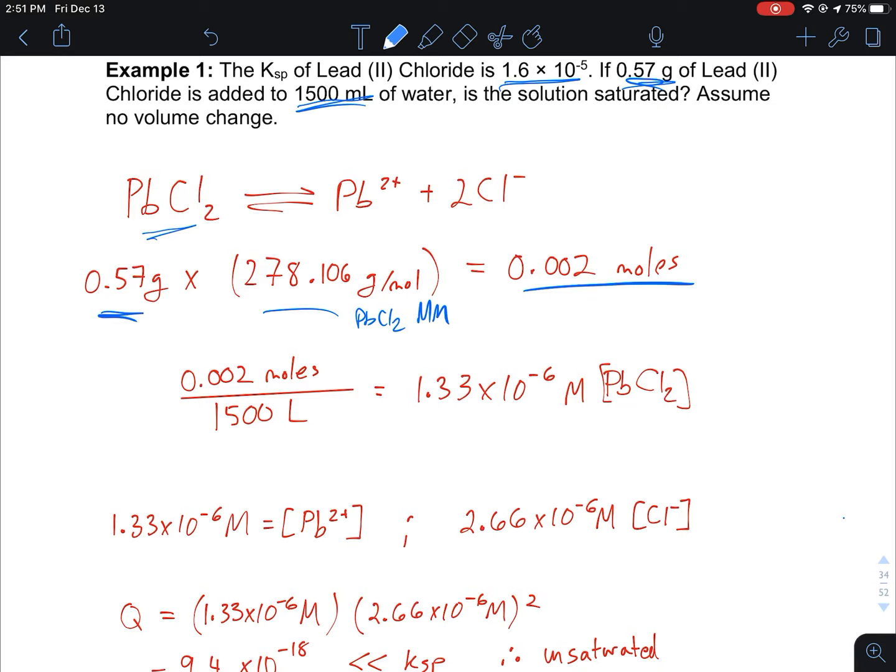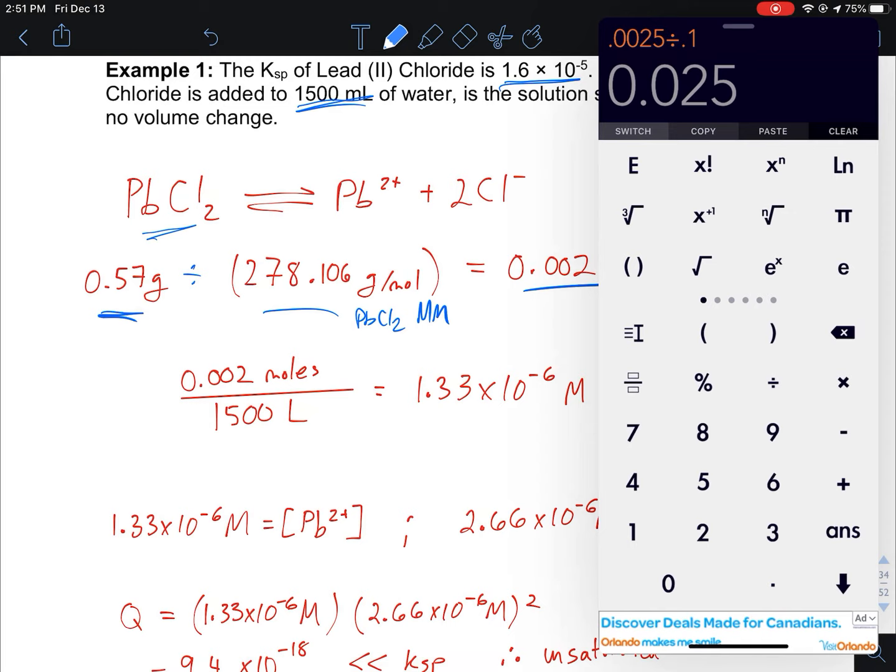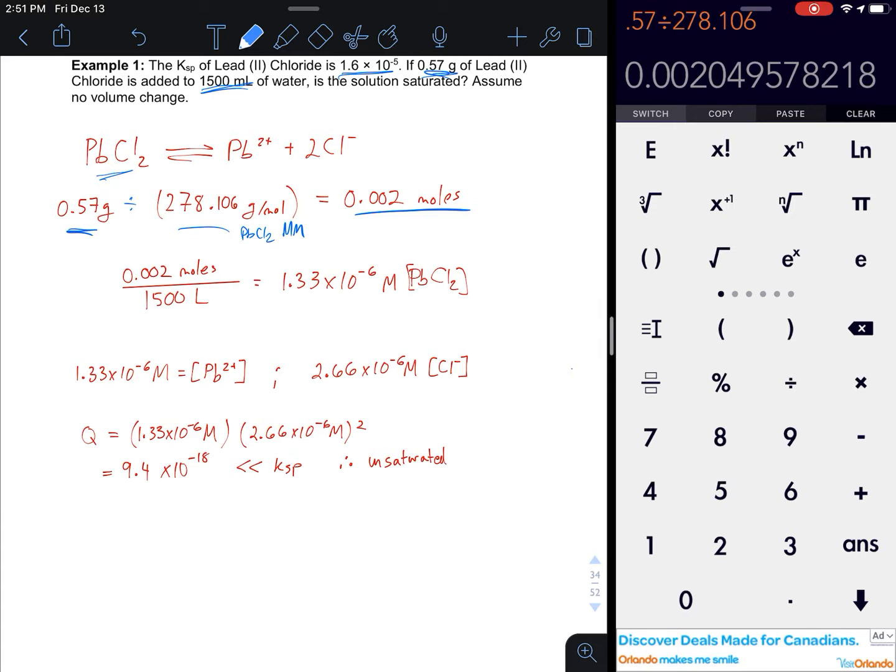I take my mass, 0.57 grams, multiply by the molar mass of lead chloride—that doesn't look right, I believe that should be a division here. Let's double check: 0.57 divided by 278.106 gives us 0.002 moles. Okay, great, we've got a good conversion there. Now we divide our moles by volume to get concentration.